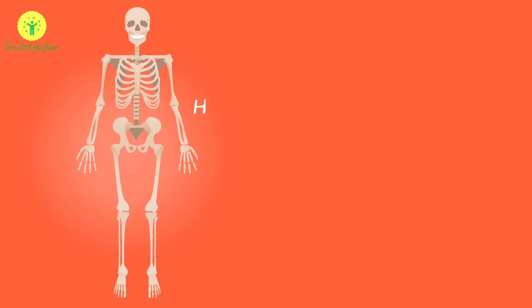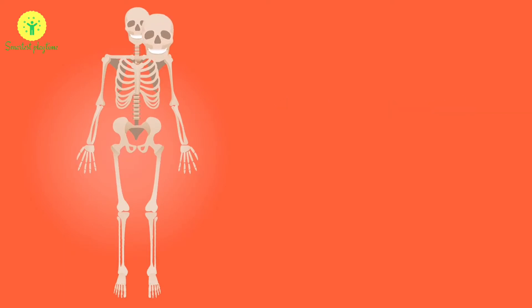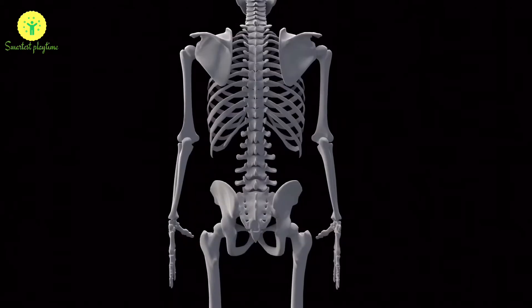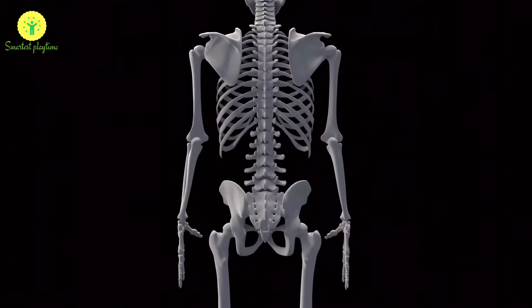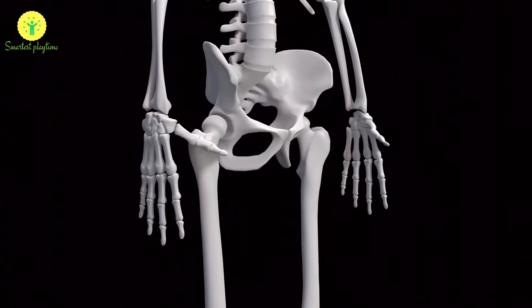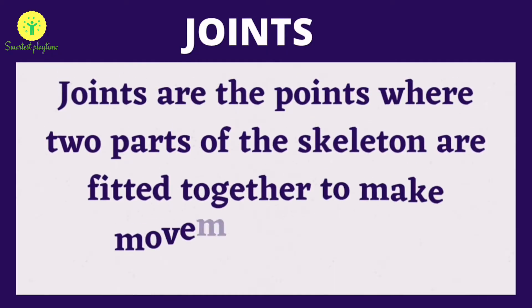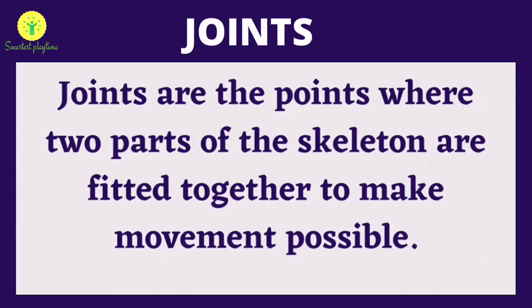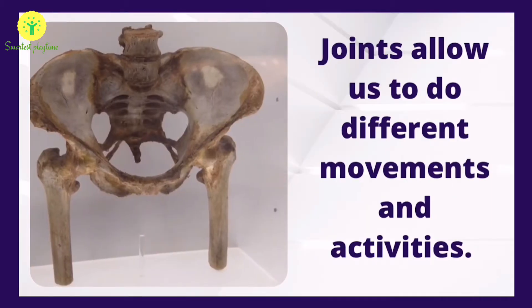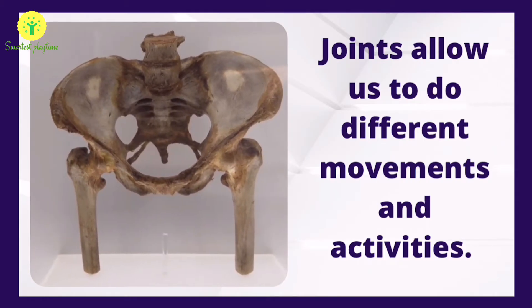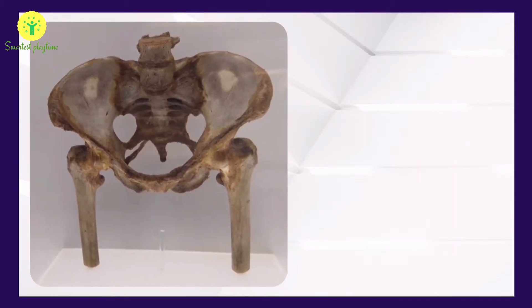A body consists of 206 bones. These are of different shapes and sizes. These bones are connected to each other at some points called joints. A joint is a place or site where two or more bones join together. Joints allow movement in some particular fashion.